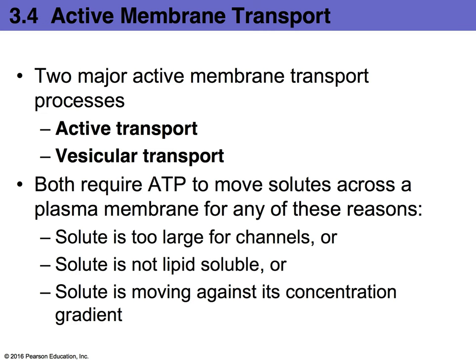Why do you need active or vesicular transport? It could be for a handful of reasons: the solute may be too large to pass through the protein channel, or the solute is not lipid soluble. Another reason could be that the solute is going against the concentration gradient. In all three of these cases, ATP is needed to move the solute across the plasma membrane.